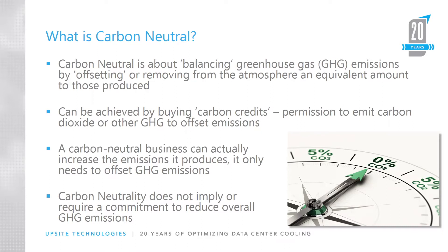Offsetting can be done by planting trees or something of that nature. One of the challenges with carbon neutral is that we can achieve it by essentially buying credits — we can offset by planting forest, or we can buy other people's permission to produce carbon. This allows businesses to continue to produce carbon and emit greenhouse gases without necessarily reducing what they're doing. A carbon neutral business can actually increase its emissions.